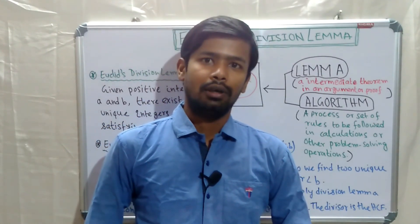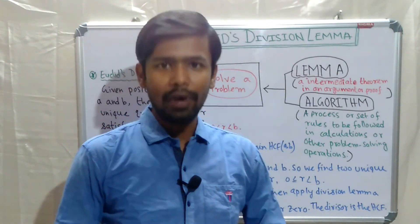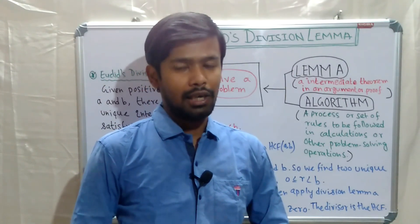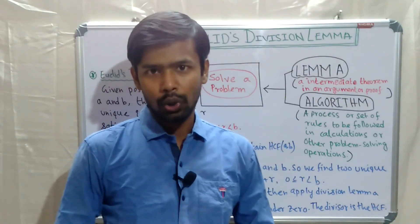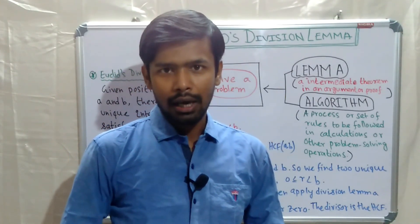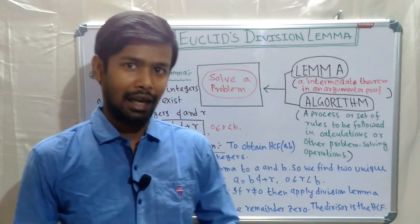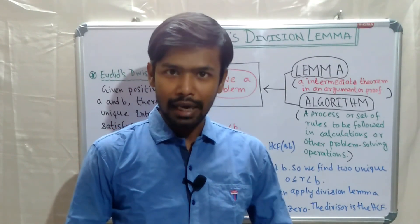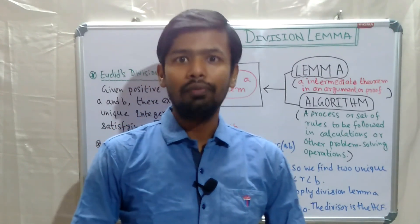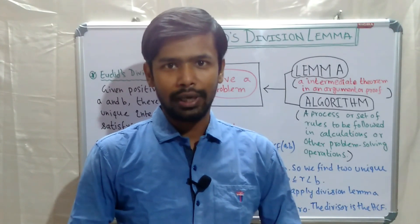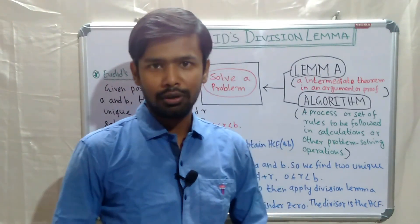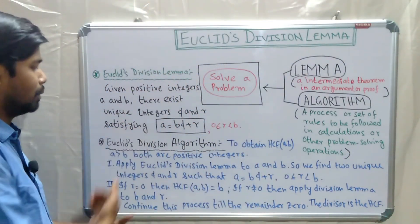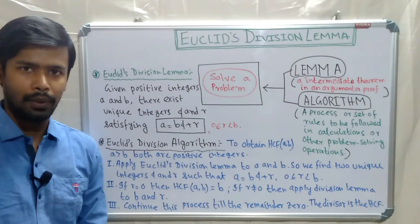So a lemma is a proven statement — if that statement is proved as true, then we call it a lemma. An algorithm is a process of solving problems, and we can use any lemma within an algorithm. Now let's move on to the difference between Euclid's division lemma and Euclid's division algorithm.